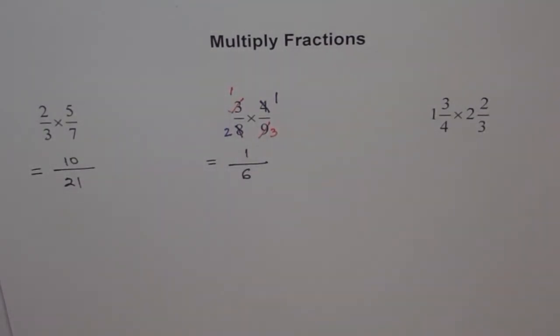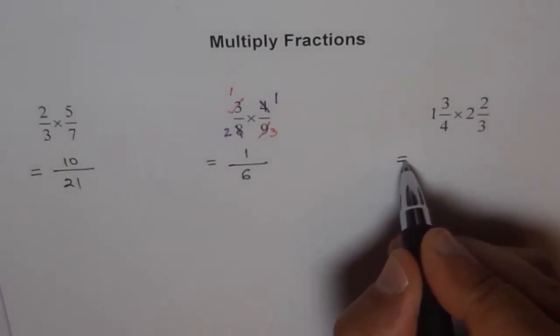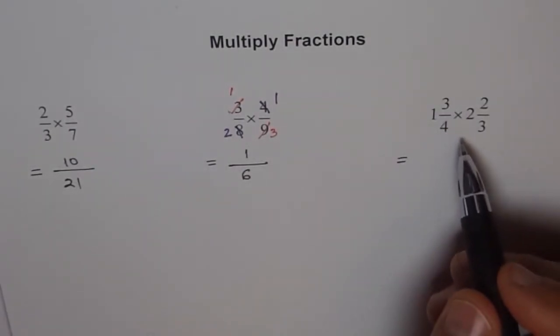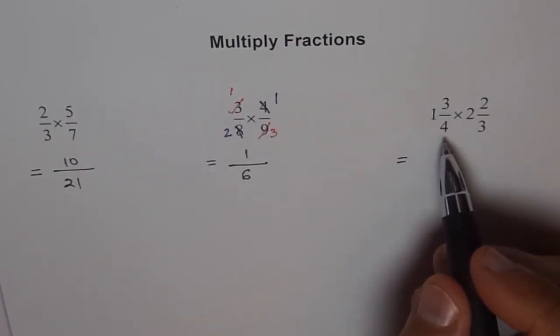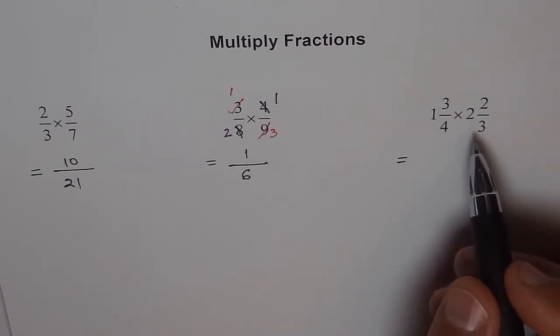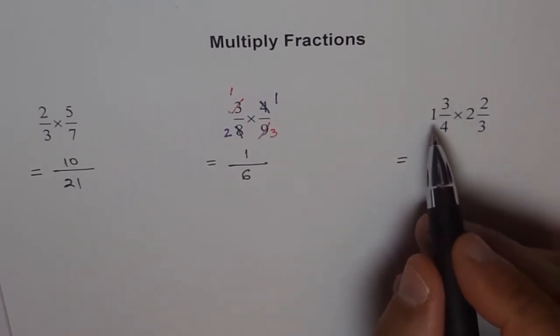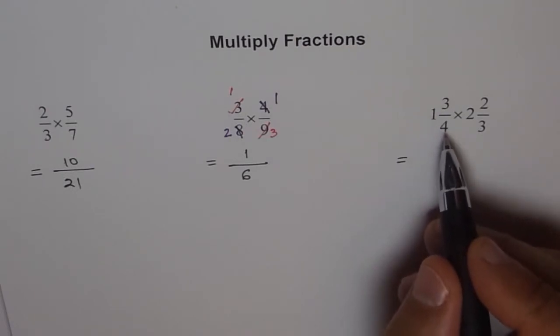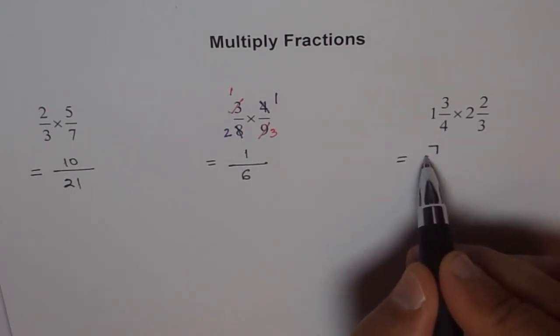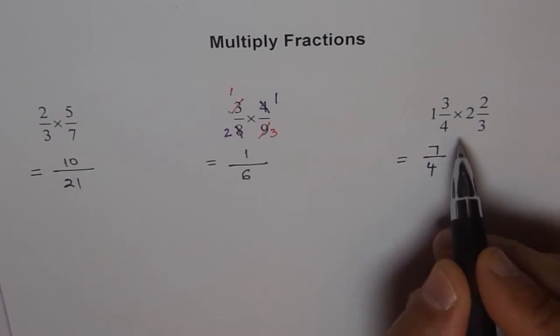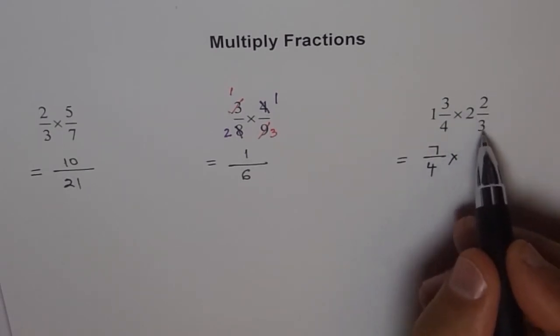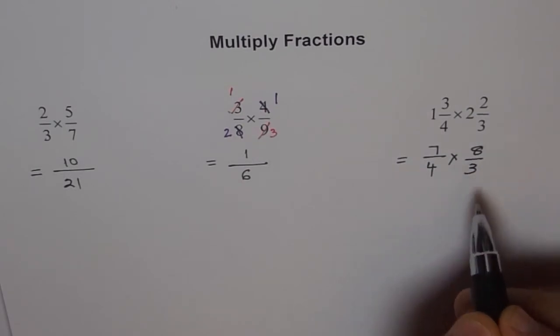Now the next one. Here, they are mixed fractions. So first step is write the mixed fraction as an improper fraction. So to write that as improper fraction, you multiply 1 with 4 and add 3, which becomes 1 plus 4. So 1 times 4 is 4, 4 plus 3 is 7. So it makes it 7 over 4 times 2 times 3 is 6, 6 plus 2 is 8. We get 8 over 3.